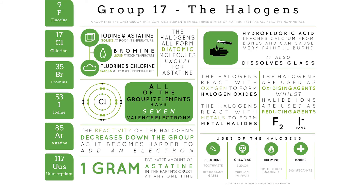The halogens can be found in all three states — as gases, liquids, or solids at room temperature. They form diatomic molecules, meaning they bond to themselves, two atoms together. They all have seven valence electrons and their reactivity decreases as you go down the group. They are used in things like fluoride in toothpaste, chlorine in bleach, bromine as a fire retardant, and iodine frequently as a disinfectant.